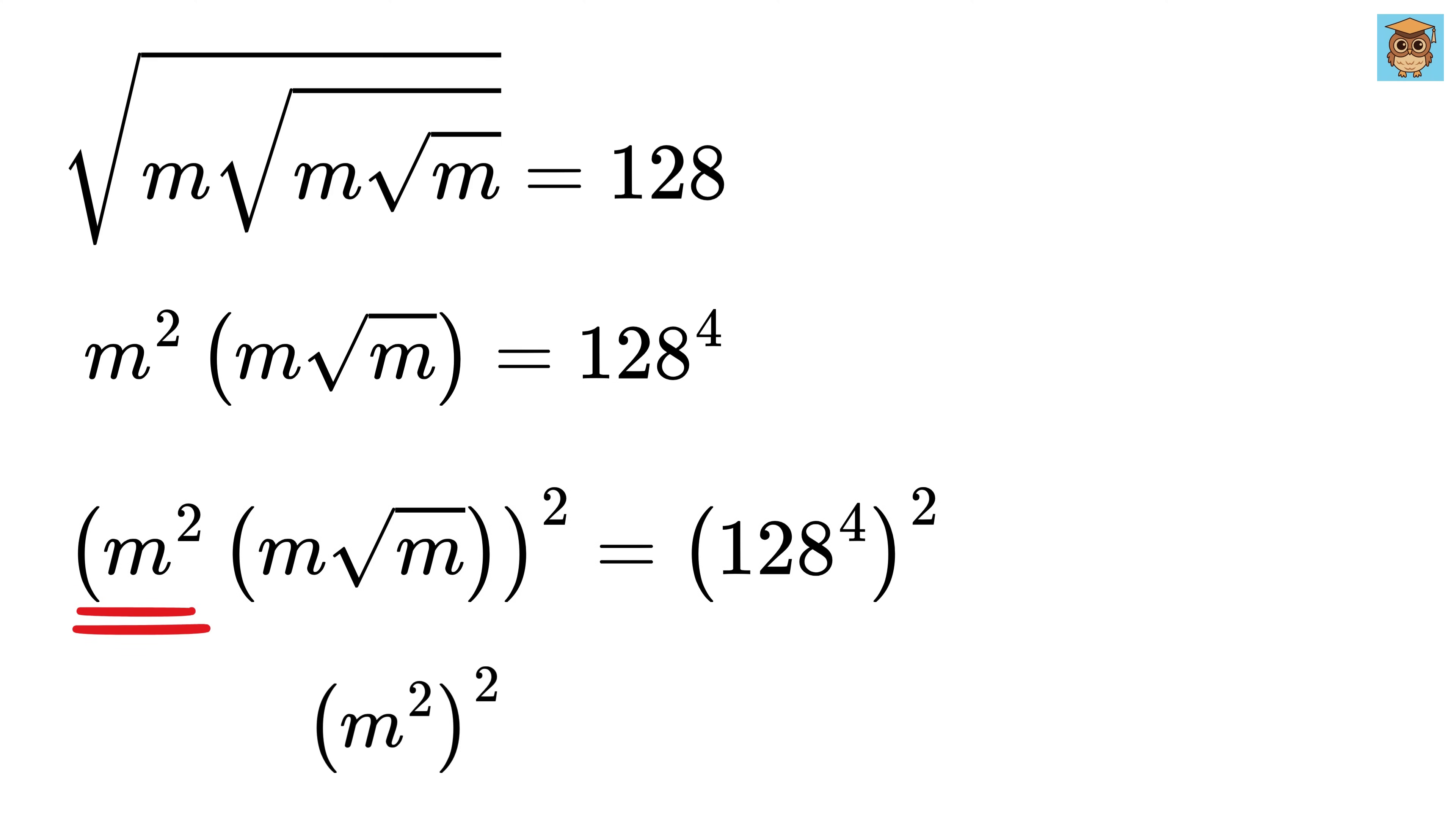This will become m square whole square, or m to the power 4. This will become m square. And here, square root will be cancelled with this power 2, and we are left with m, which we can also rewrite as m raised to power 1. And this will become 128 raised to power 4 times 2 or 8.